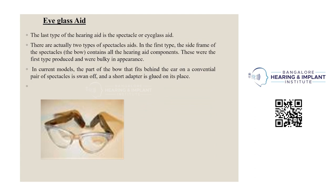The last type of hearing aid is the eyeglass or spectacle aid. There are actually two types. In the first type, the side frame of the spectacles contains all the hearing aid components — these were the first type produced and were bulky in appearance. In current models, the part of the bow that fits behind the ear on a conventional pair of spectacles is adapted and glued in place.